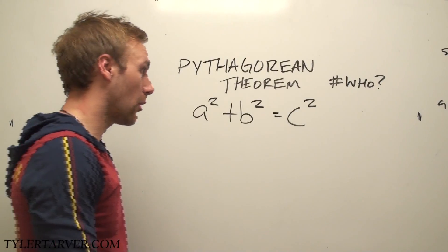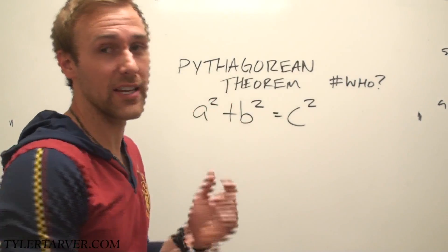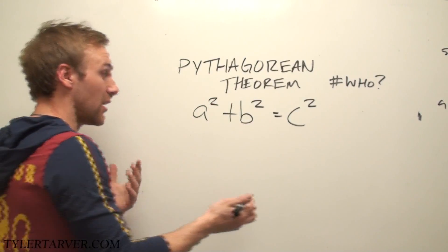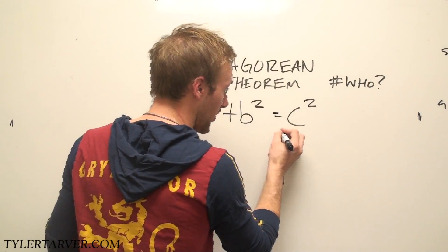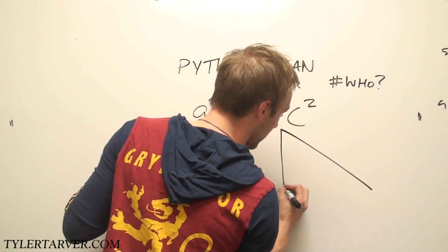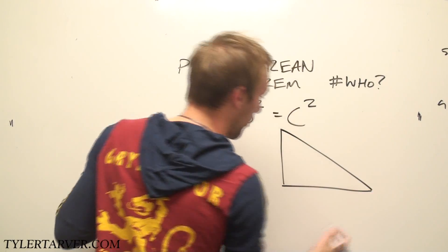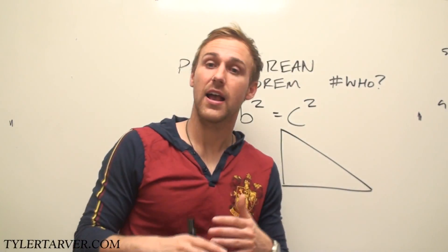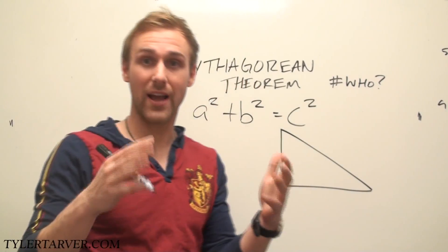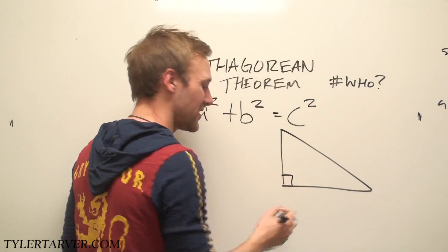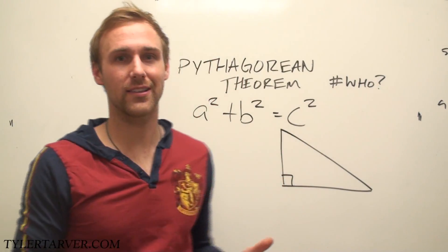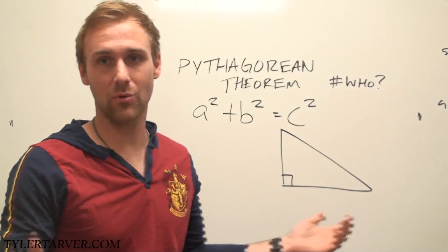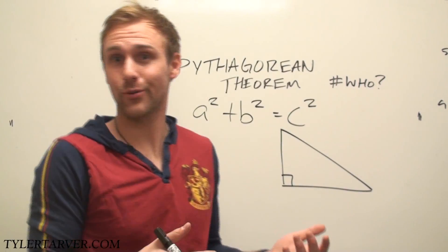What these variables relate to are the sides of a right triangle. Now, if you don't know what a right triangle is, a right triangle is a triangle. It has three sides, and it has a right angle in it — meaning it has a 90-degree angle. 90-degree angles are like the Michael Jordan of angles — everybody wants to be them, because they're always right.